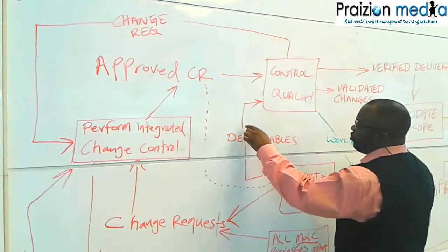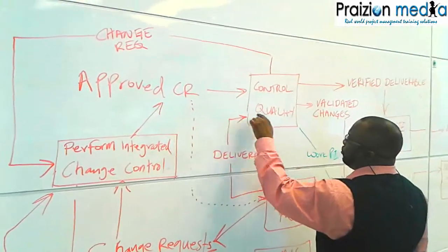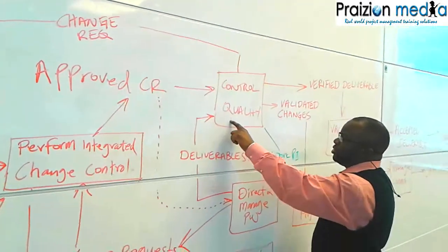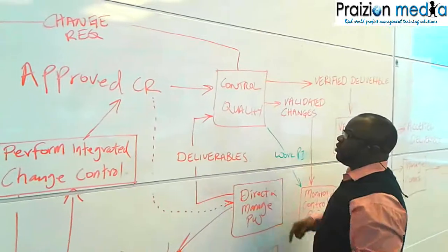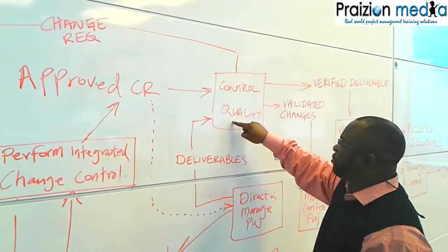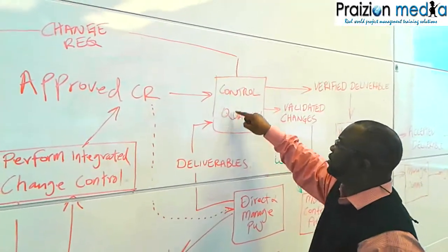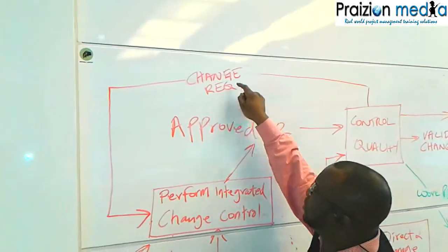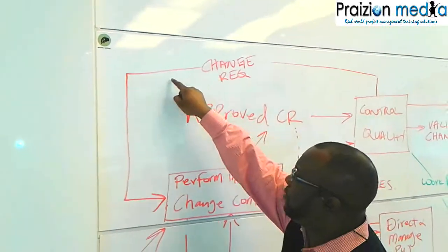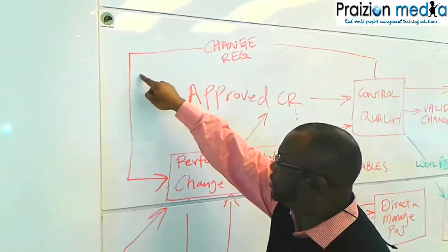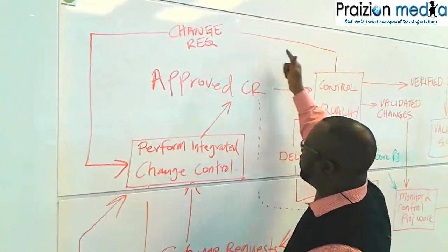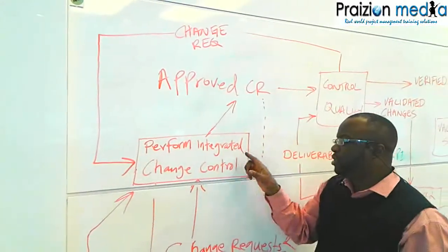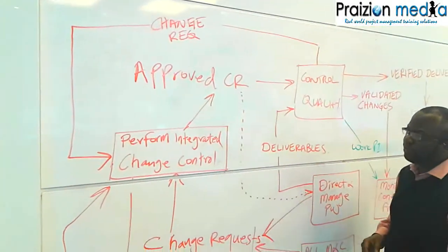That deliverable will go into Control Quality for inspection. Now if that deliverable does not pass the test, we have change requests which become an output of Control Quality and they become an input to Perform Integrated Change Control.